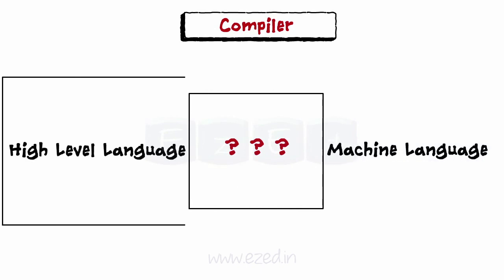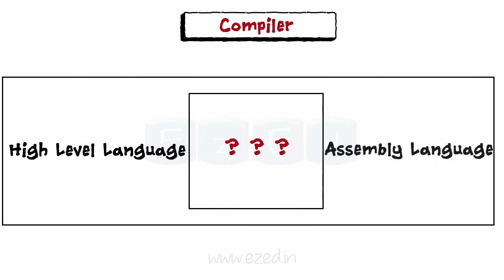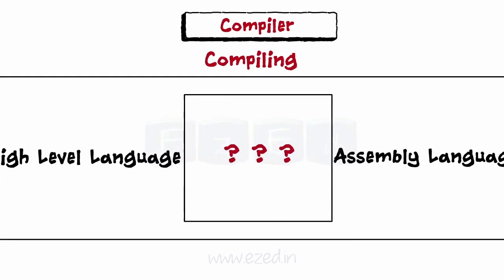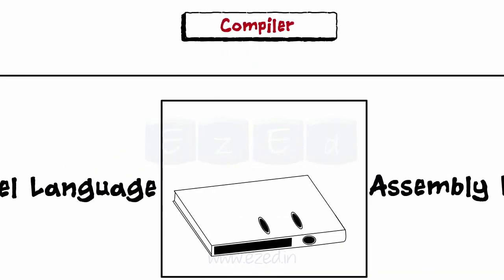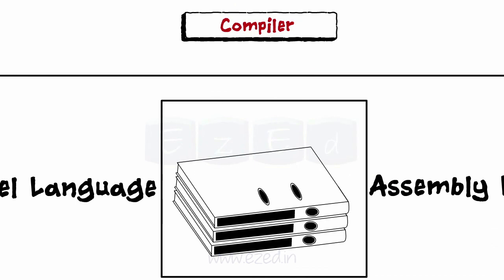This process of converting high-level language into low-level language, which is often binary or assembly language, is termed as compiling. The set of programs that do the translations are grouped together in a term known as compiler.